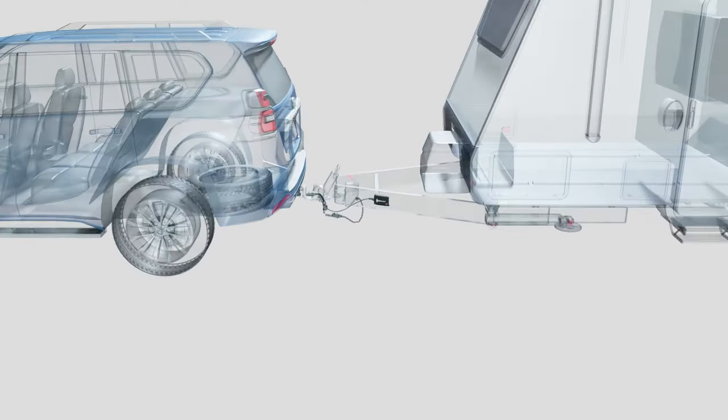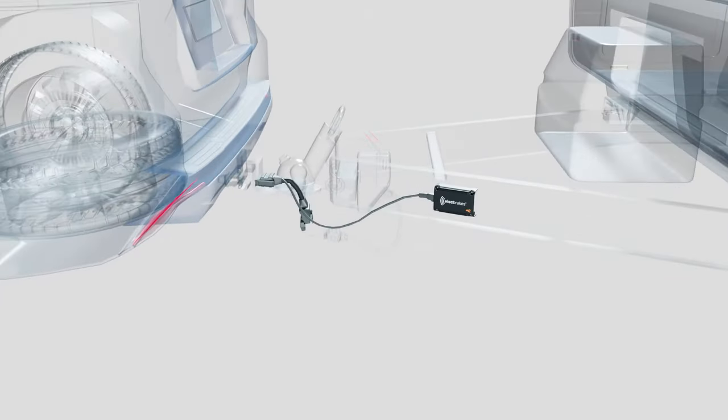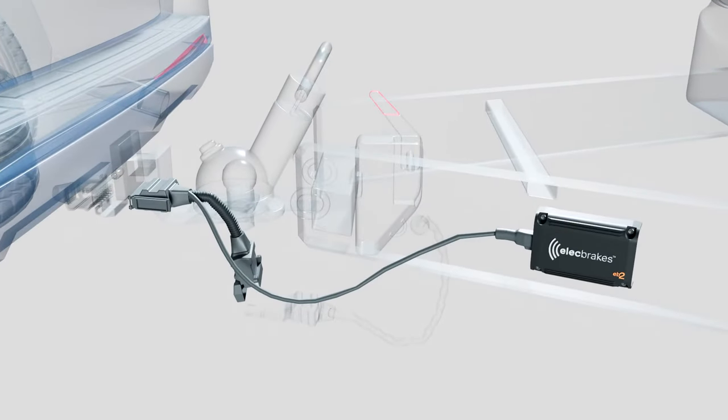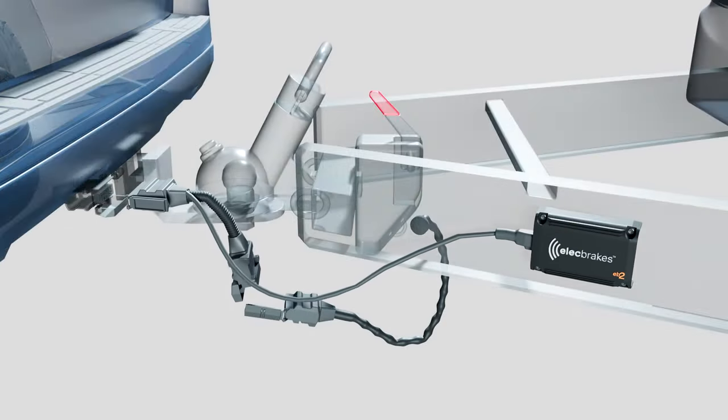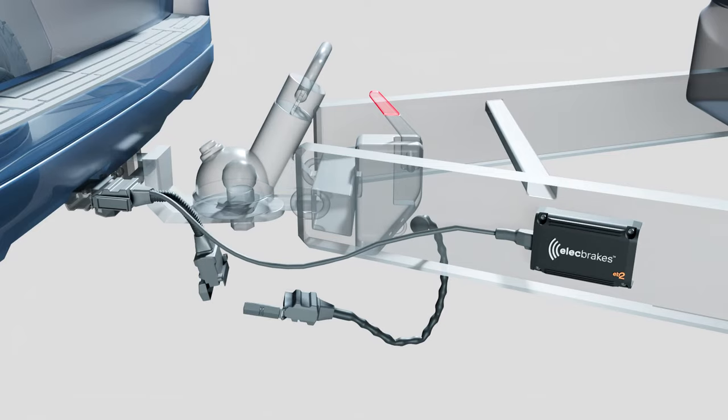The ELEC Brakes brake controller is mounted to the drawbar of the trailer and connected to the car via the plug-and-play adapter, which plugs in between the trailer plug and the car socket.